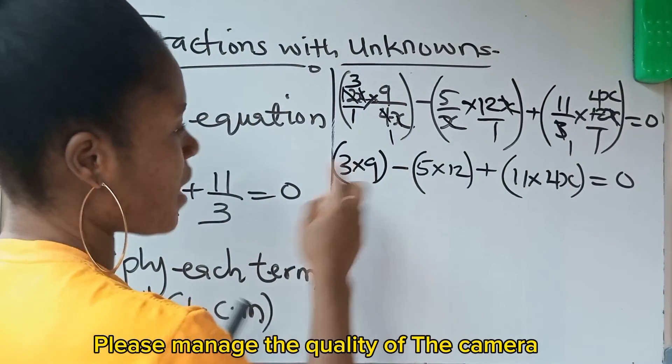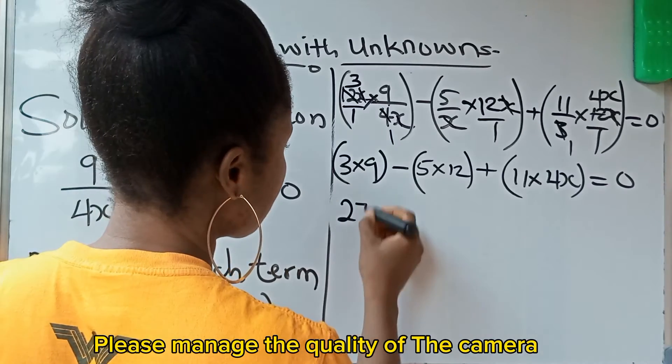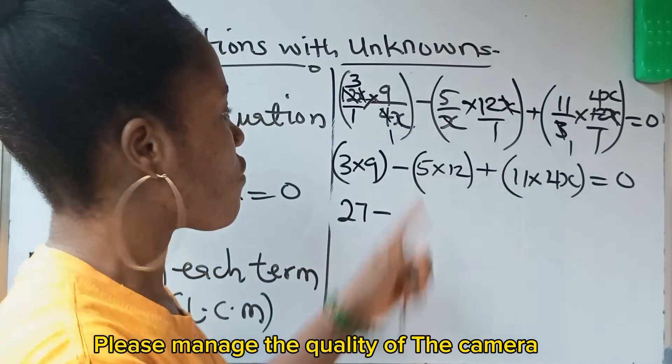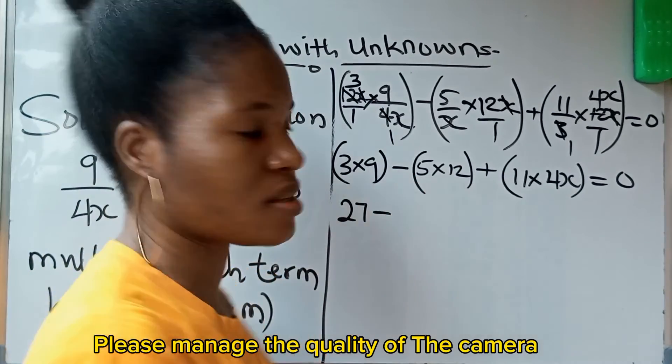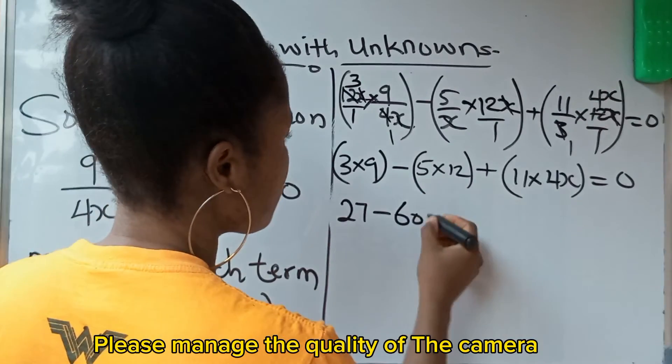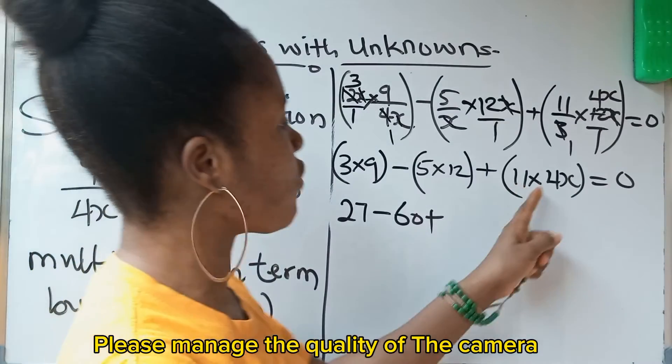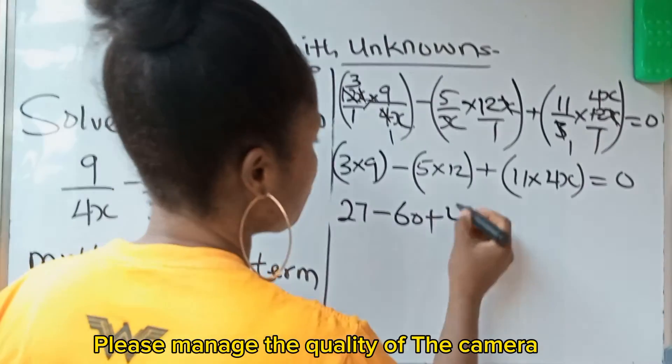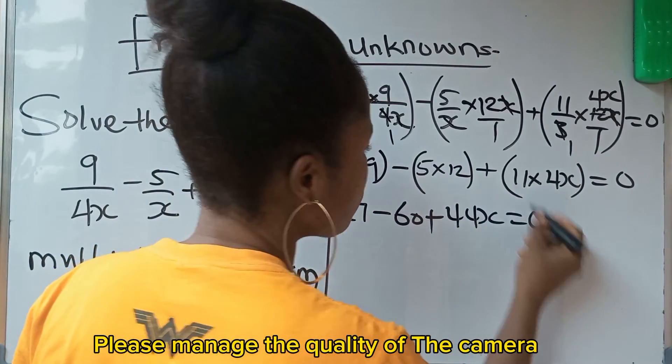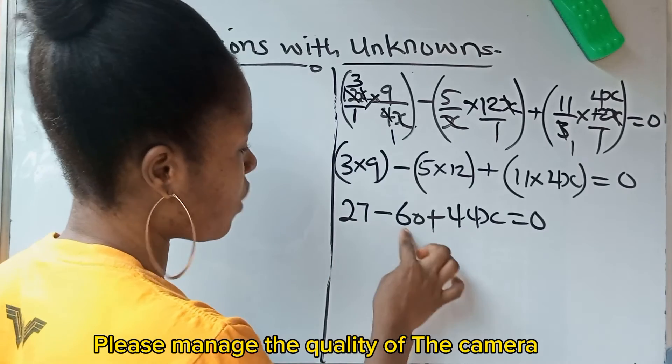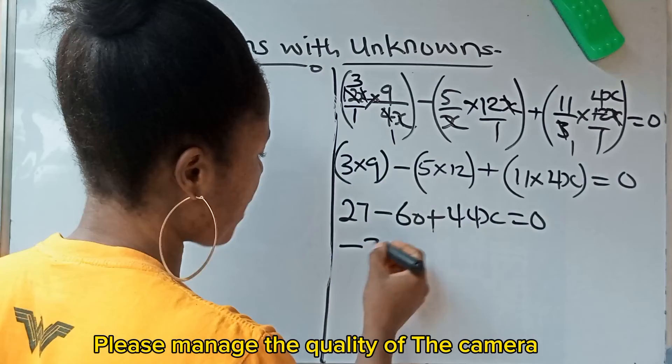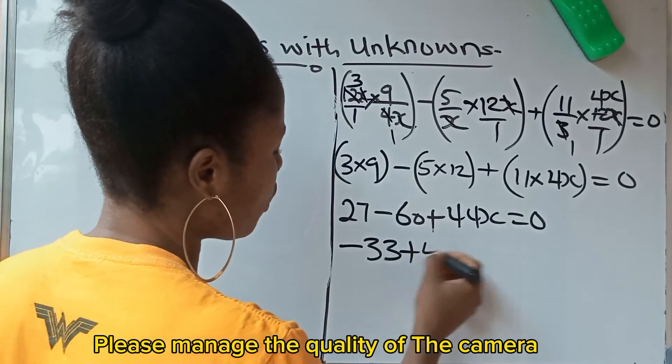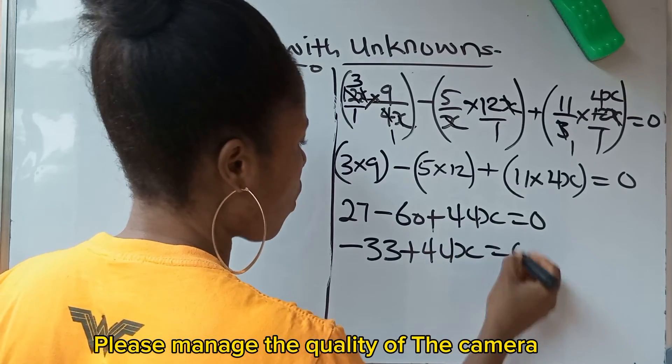Now 3 times 9 gives us 27. Minus 5 times 12 gives us 60. Plus 11 times 4x gives us 44x. Plus 44x equals 0. 27 minus 60, you are going to have minus 33 plus 44x is equal to 0.